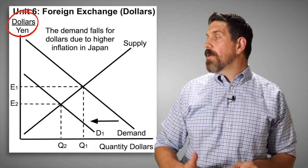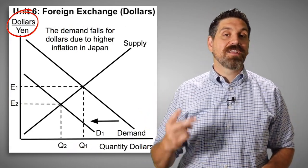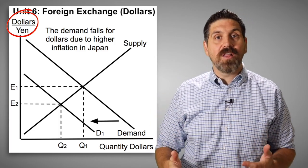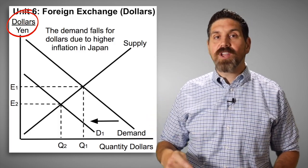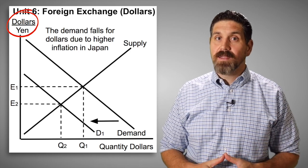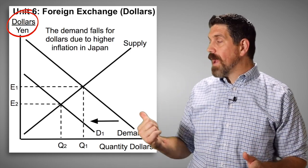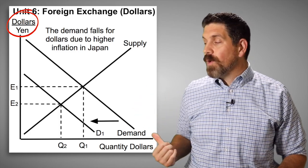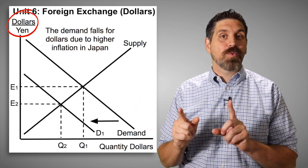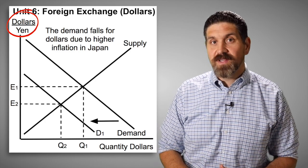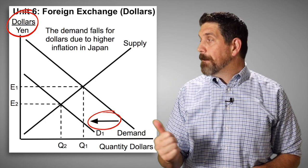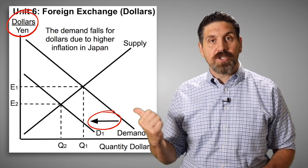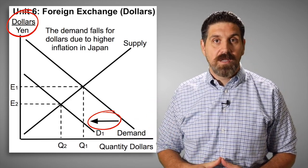And finally, here in unit six, when you learn about foreign exchange, this graph has two mistakes. First, we're looking at the quantity of dollars, the market for dollars, that should be the yen over dollars, not dollars over yen. Now, in terms of labeling, the rest of the graph is correct. We've got demand, supply correctly labeled, exchange rate one, two, quantity one, two. That's right, except it's the wrong direction when it comes to the shift. If there's more inflation in Japan, then Japanese people wanna buy more American stuff, and that would increase the demand for dollars. So that shift is the wrong direction.